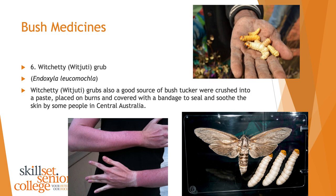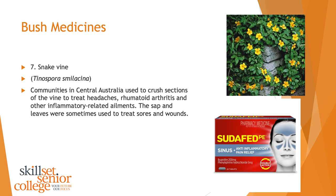Snake vine is used by communities in central Australia — crushed sections of the vine are used to treat headaches, rheumatoid arthritis, and other inflammatory-related ailments. Inflammatory ailments are conditions where something gets inflamed or swollen as blood vessels dilate. The sap and leaves are also used to treat sores and wounds, so it has anti-inflammatory properties which are amazing for a plant.